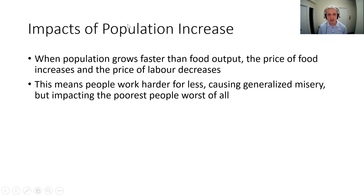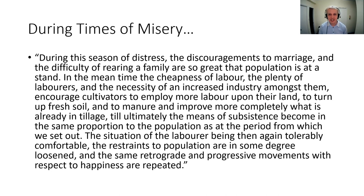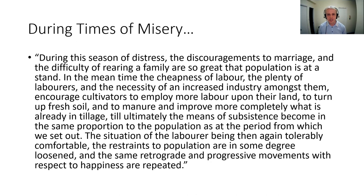When population grows faster than food output, the price of food is likely to increase and the price of labor is likely to decrease. This means people work harder for less money — a general cause of misery. The poorest people will be worst impacted by all this, and this is why Malthus had such a dismal view of social progress. Malthus definitely does the dismal doomsday voice especially well, and you can see that in his writing.